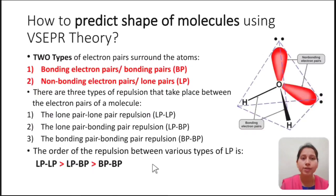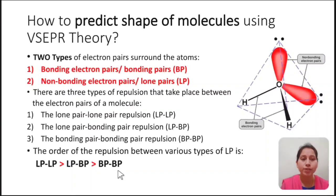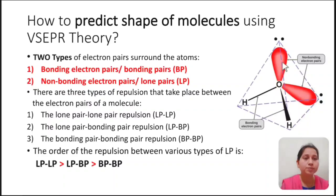The order of repulsion is: lone pair–lone pair repulsion is greater than lone pair–bond pair repulsion, which is greater than bond pair–bond pair repulsion. In a water molecule (H₂O), there are two lone pairs and two bond pairs. The repulsion between lone pair and lone pair is maximum, then between lone pair and bond pair is less, while the repulsion between the two bonding pairs is the minimum.